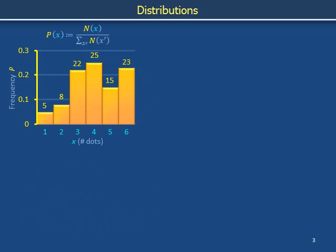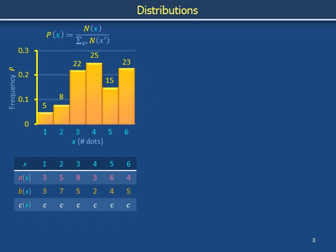For each outcome — meaning 1 dot up, 2 dots up, 3 dots up, and so forth — assign a value to the function a(x), to the function b(x), and to the function c(x). In this example, function c(x) is a constant function that always returns the number c regardless of the number of dots facing up. Because distributions may involve plotting many numbers, we often use small collections of numbers, or so-called statistics, to attempt to characterize distributions concisely. In some situations these statistics provide enough information for a particular application, but in other situations detailed knowledge of the full distribution is required.